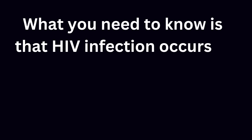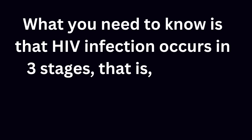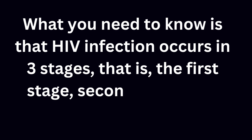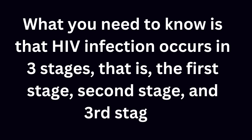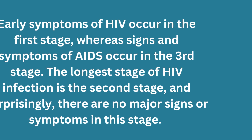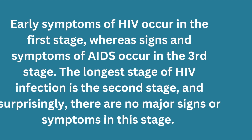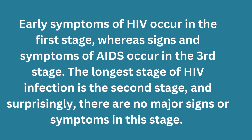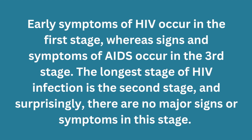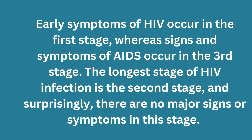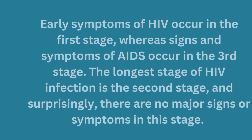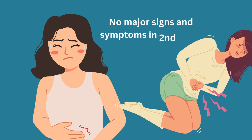What you need to know is that HIV infection occurs in three stages: the first stage, second stage, and third stage. Early symptoms of HIV occur in the first stage, whereas signs and symptoms of AIDS occur in the third stage. The longest stage of HIV infection is the second stage, and surprisingly, there are no major signs or symptoms in this stage.